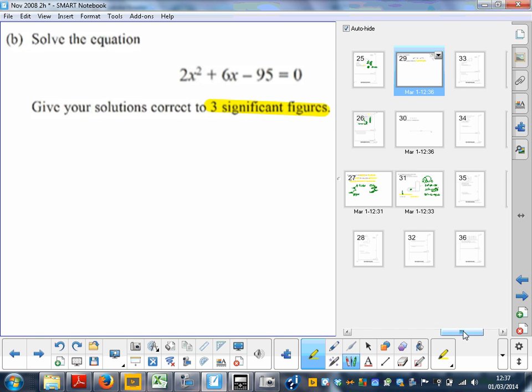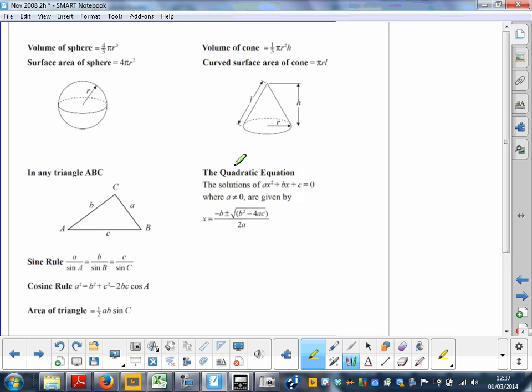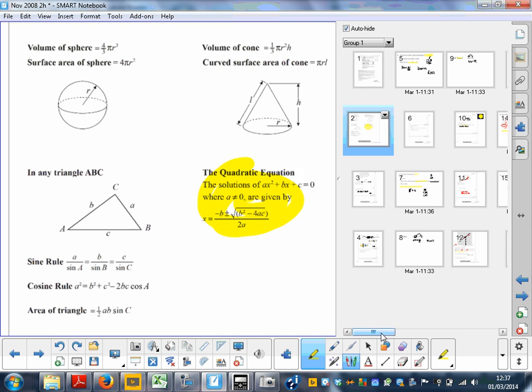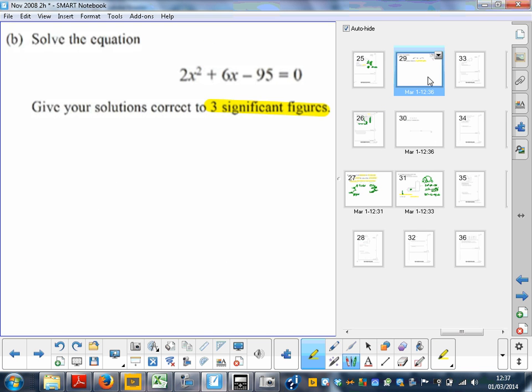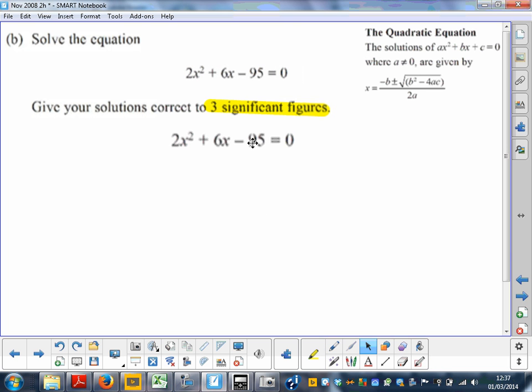If I go back to my formula page, obviously I'm looking at this particular bit. That's all I've done - basically copy and paste it. If you remember, all I have to do is start finding what a, b, and c are. I put them next to each other: ax² + bx + c = 0. So a is 2, b is 6, and c is -95.